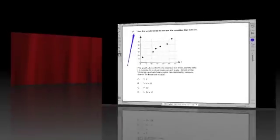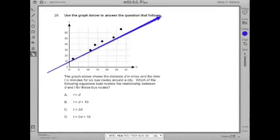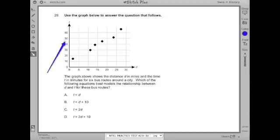Number 29: Use the graph below to answer the question that follows. It's got a graph on a coordinate grid, so I should be thinking algebra. It says the graph above shows the distance d in miles and the time t in minutes for six bus routes around a city. Which of the following equations best models the relationship between d and t for the bus routes? And then it gives us a whole bunch of answer choices.